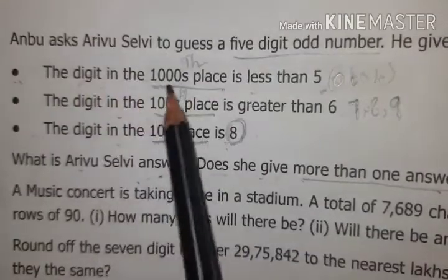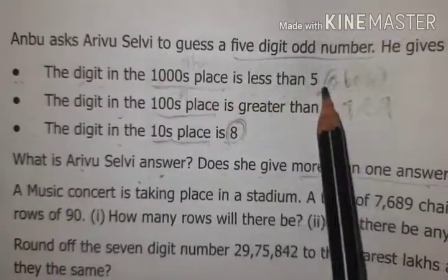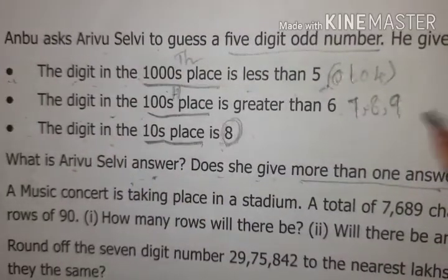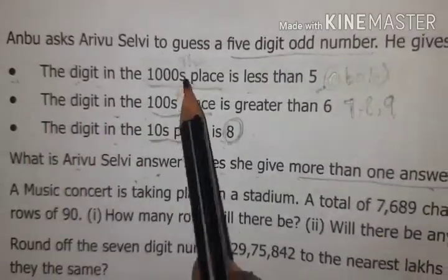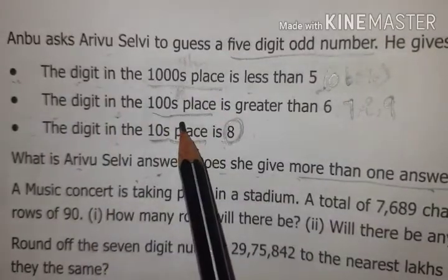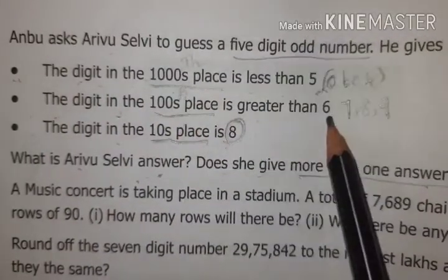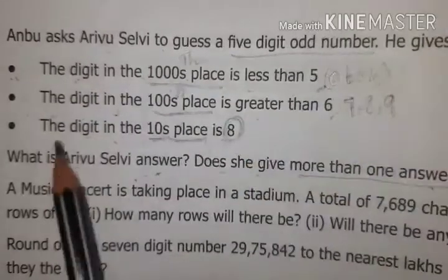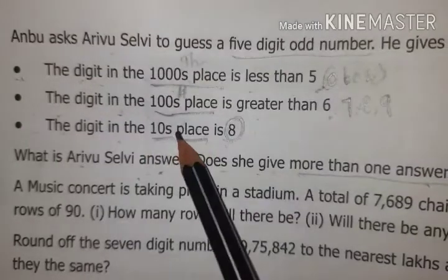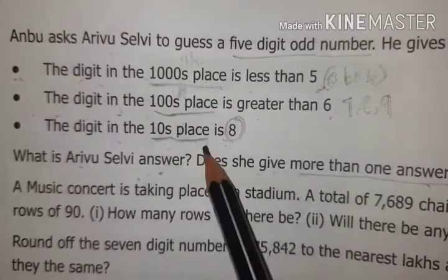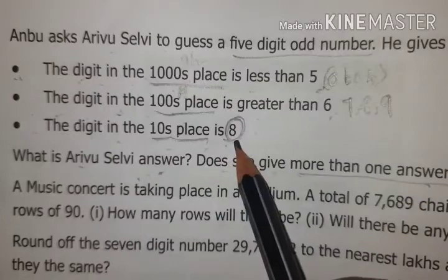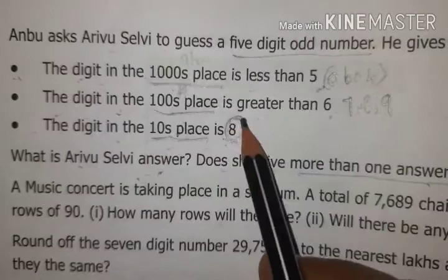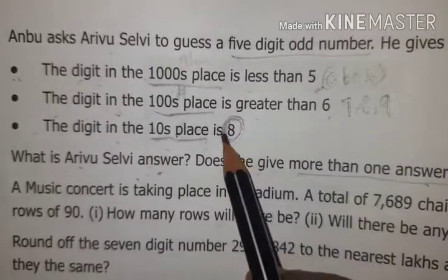The digit in the thousands place is less than five: zero, one, two, three, four — any one number. The digit in the hundreds place is greater than six: seven, eight, or nine. The digit in the tens place is eight — fixed, only one number. The number must be a five-digit odd number, so the ones place must be an odd digit.